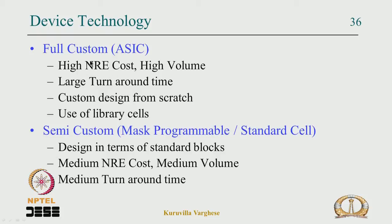ASIC has a huge non-recurring engineering (NRE) cost — a one-time cost that must be amortized over the number of chips produced. If only 10,000 chips are produced, an ASIC is not viable. ASICs are designed only for high volumes such as desktop CPUs or mobile phone SoC chips. The turnaround time from specification to first chip can be 1 to 2 years. However, once designed, ASICs can run at very high frequencies — for example, 3 GHz processors — because they are custom designed.